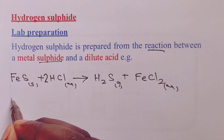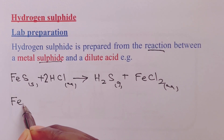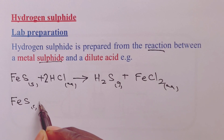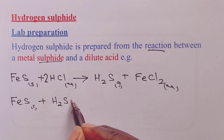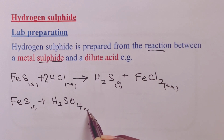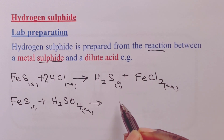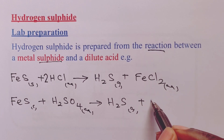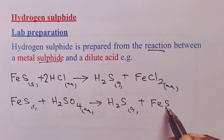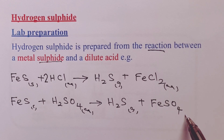We can also use iron(II) sulfide with dilute sulfuric acid, where we shall obtain hydrogen sulfide together with iron(II) sulfate. This second equation balances itself out, and therefore we do not need to balance.